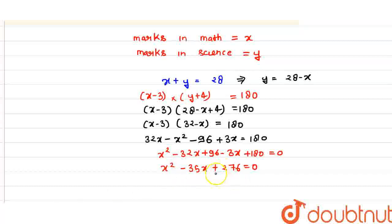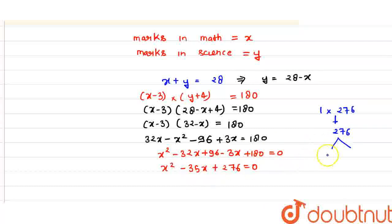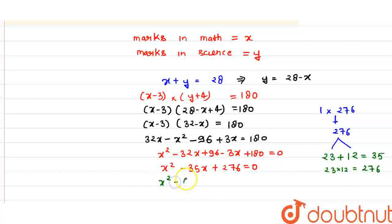Now we need to simplify this quadratic equation. The coefficient of x squared is 1 and the constant is 276. We need two numbers that multiply to 276 and add to 35. We take 23 and 12: 23 plus 12 equals 35, and 23 into 12 equals 276. So we can write the middle term as 23 plus 12.